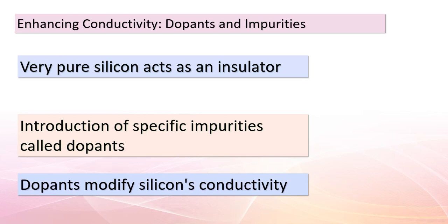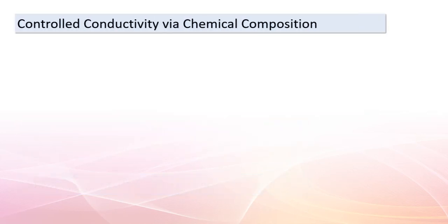Let's explore how silicon's conductivity can be altered. While very pure silicon may not conduct electricity effectively, we can make a remarkable transformation. By introducing specific impurities known as dopants into the silicon crystal lattice, we can dramatically enhance its electrical conductivity. These dopants, carefully chosen based on their electronic properties, interact with the silicon atoms and create a controlled level of conductivity. This is a critical technique in the world of semiconductor physics and technology.